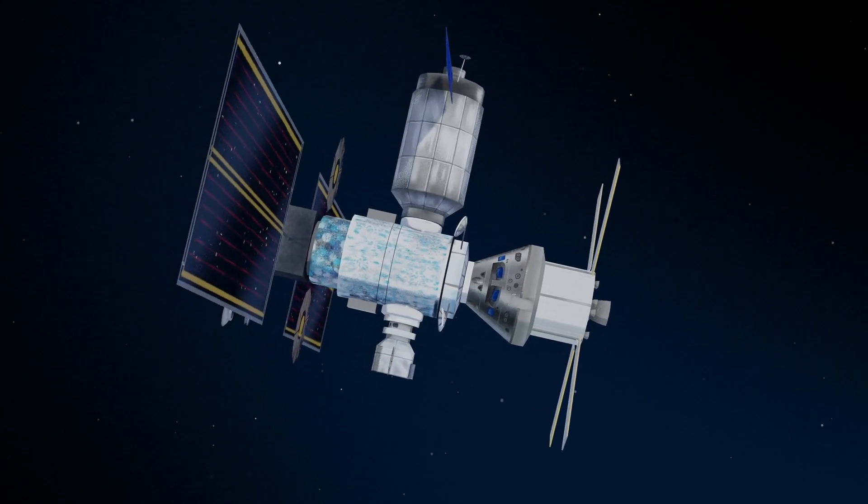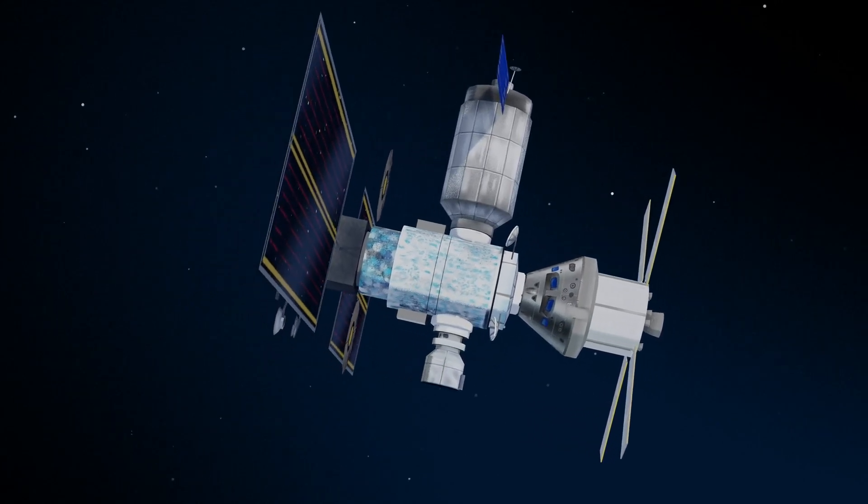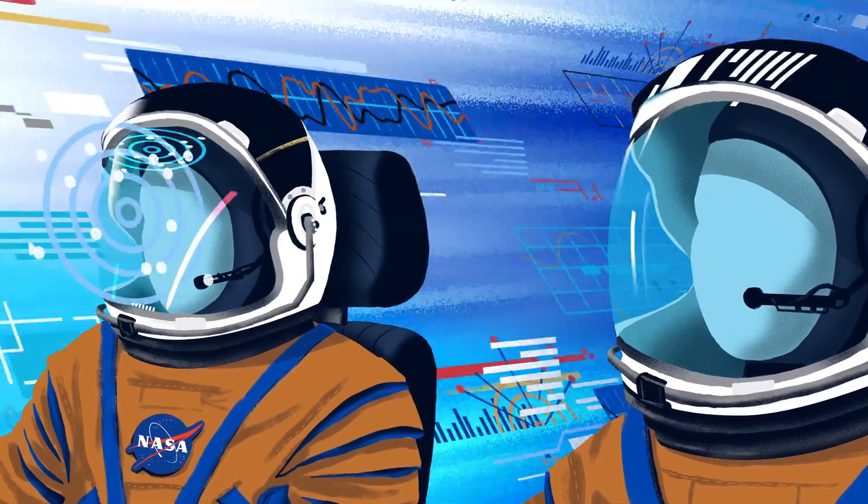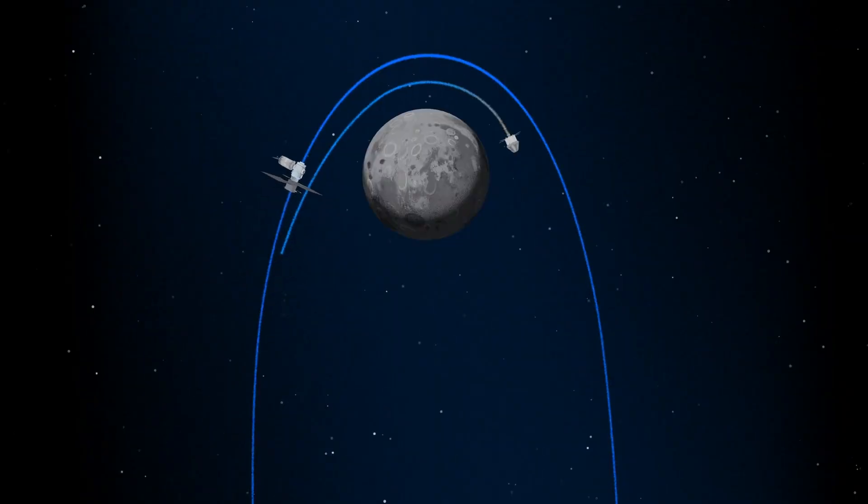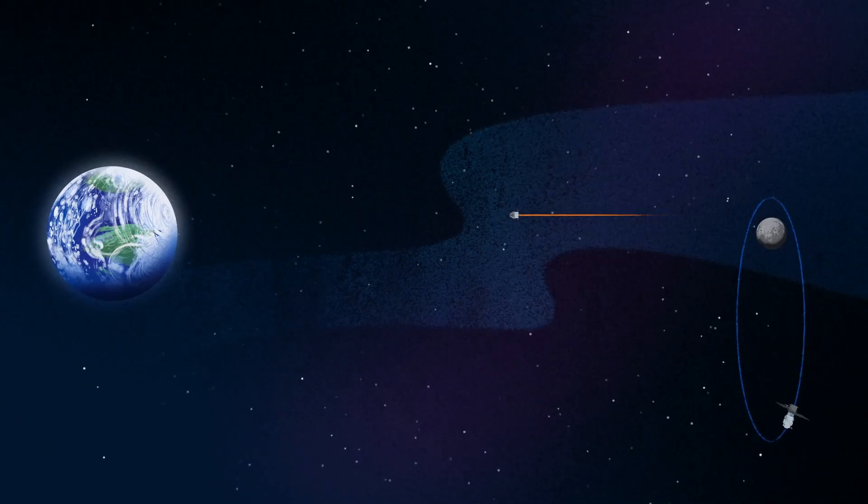Once back aboard the Orion spacecraft and undocked from Gateway, the crew fire their engine once to break out of the halo orbit, and once again to sling the spacecraft around the Moon, placing it on a multi-day trajectory back towards Earth.